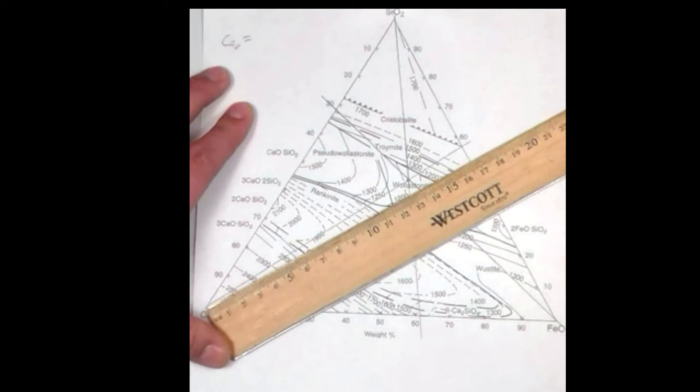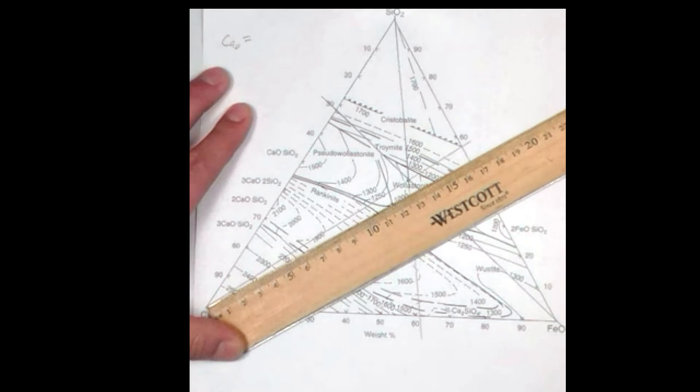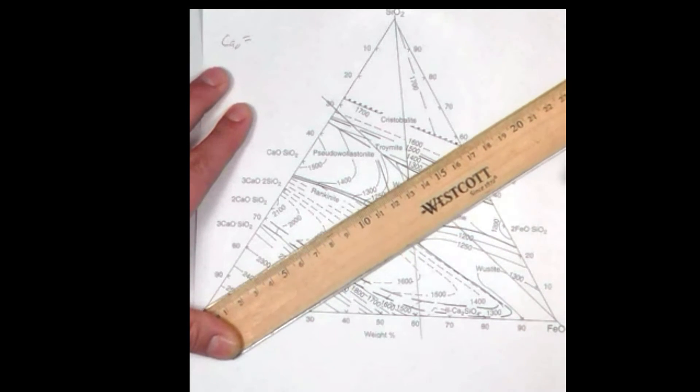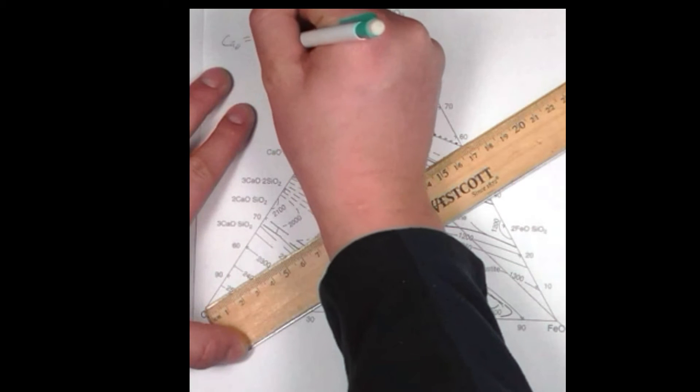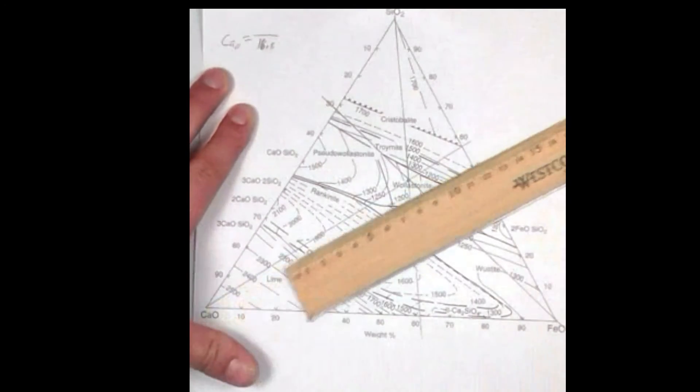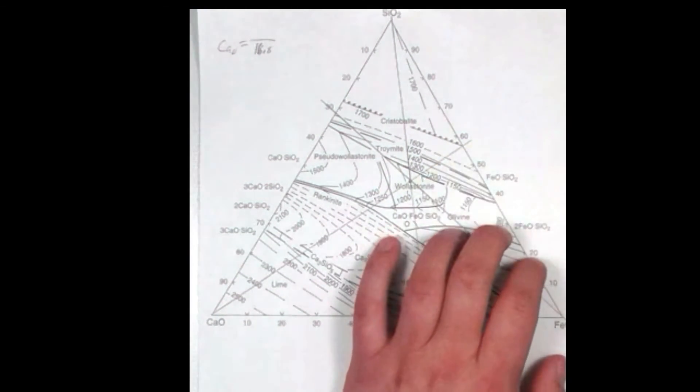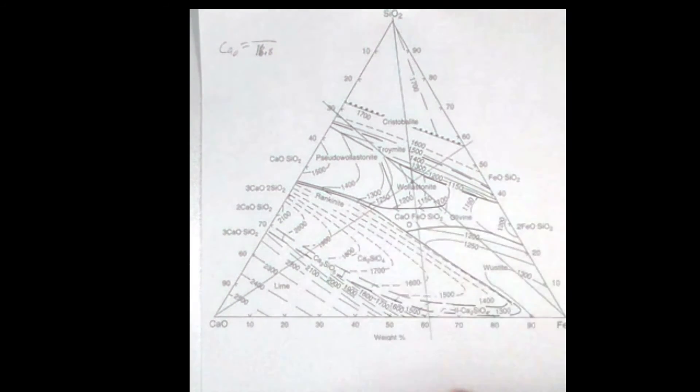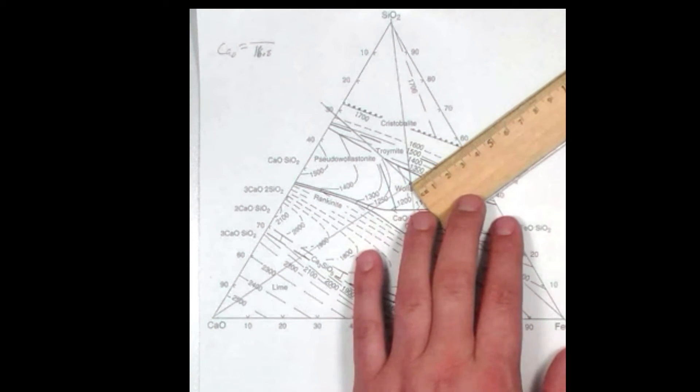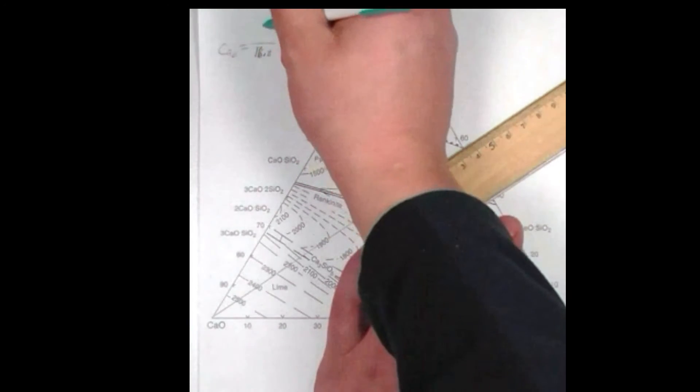The total length of the line CAO is 16.8 centimeters, and the distance from our zero side of the triangle to the point of interest is 3.5 centimeters.